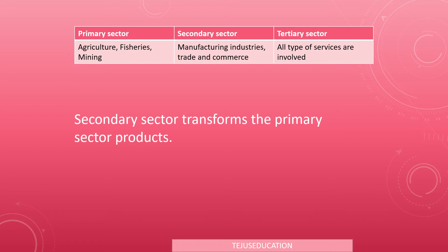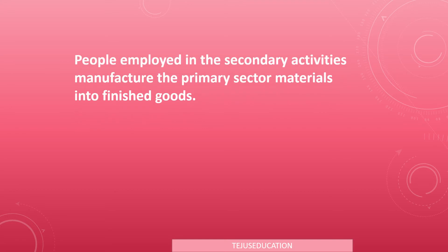The secondary sector transforms primary sector products — which are the raw materials — into useful products. People employed in secondary activities manufacture the primary sector materials into finished goods. For example, inside a factory, sugarcane is converted into sugar by the people employed there.